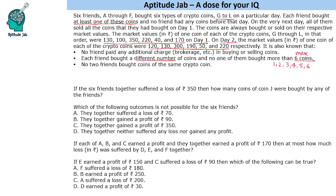No two friends bought coins of the same crypto coin. So that means one of them will buy G, one will buy H, I, J, K, L, and the quantities are 1, 2, 3, 4, 5, 6.